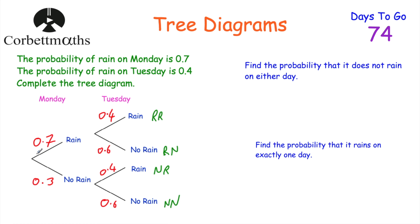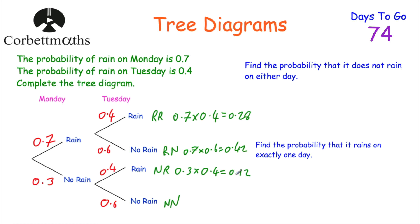The first question says: find the probability that it does not rain on either day. That's no rain and no rain, which is 0.18. So the probability that it does not rain on either day is 0.18.